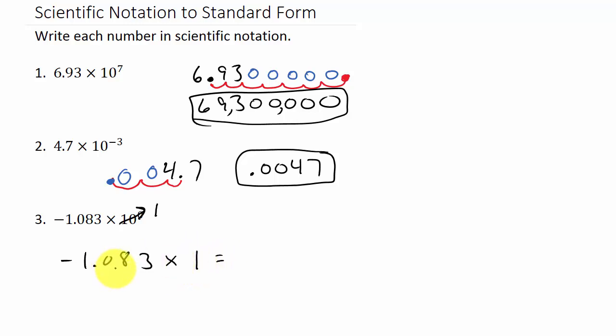And remember, anything times 1, you get the same thing back. So, that's negative 1.083. And this would be your answer.